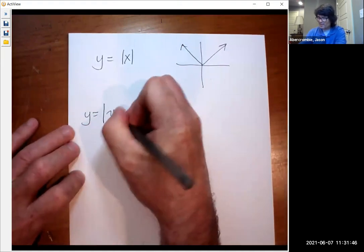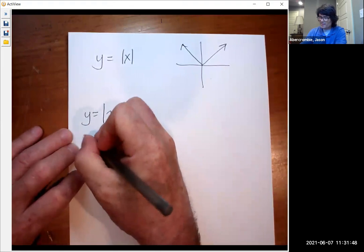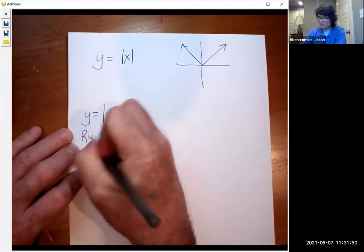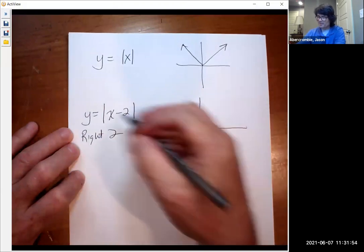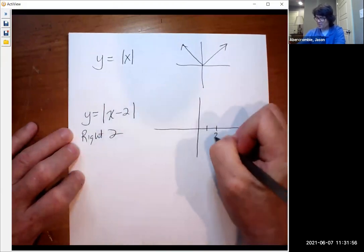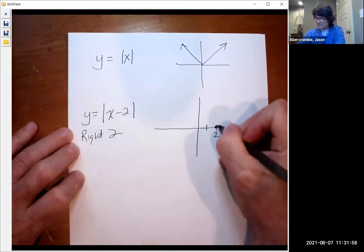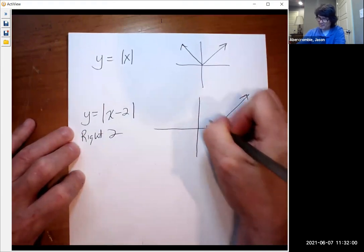If you have the absolute value of x minus two, that is a shift right two because the minus means right and it's inside the function. So we're going to have the vertex there and it looks kind of like this now.